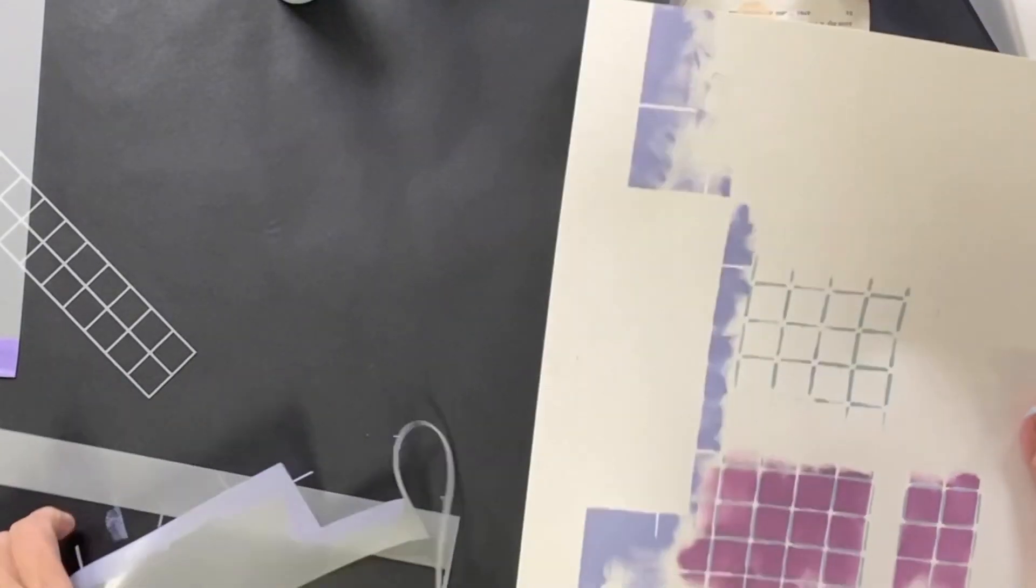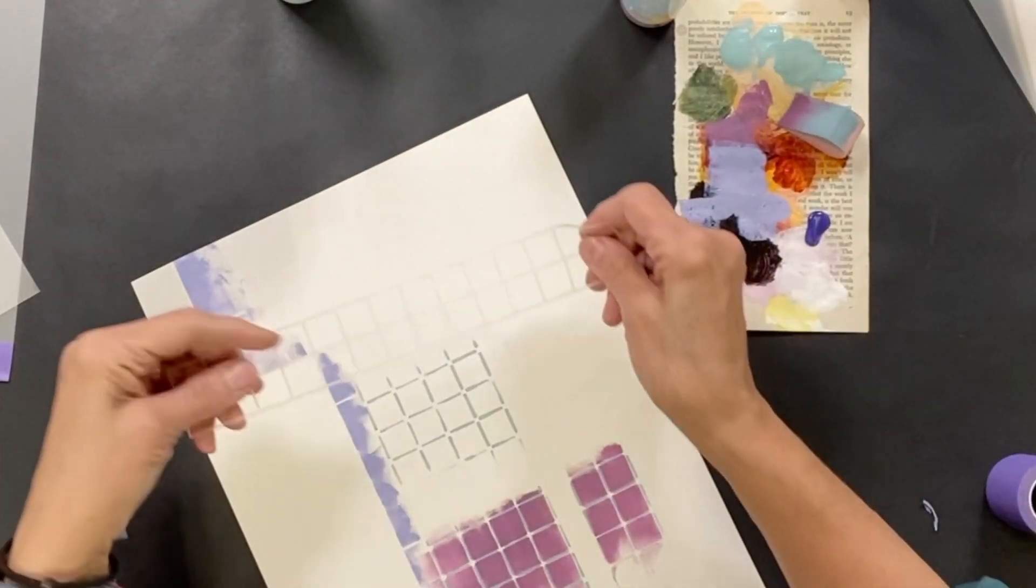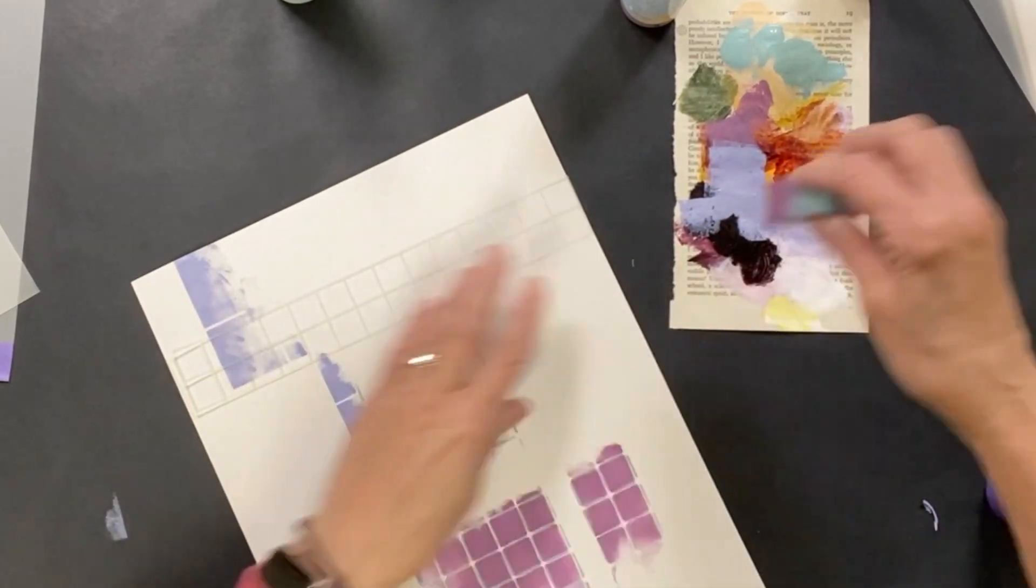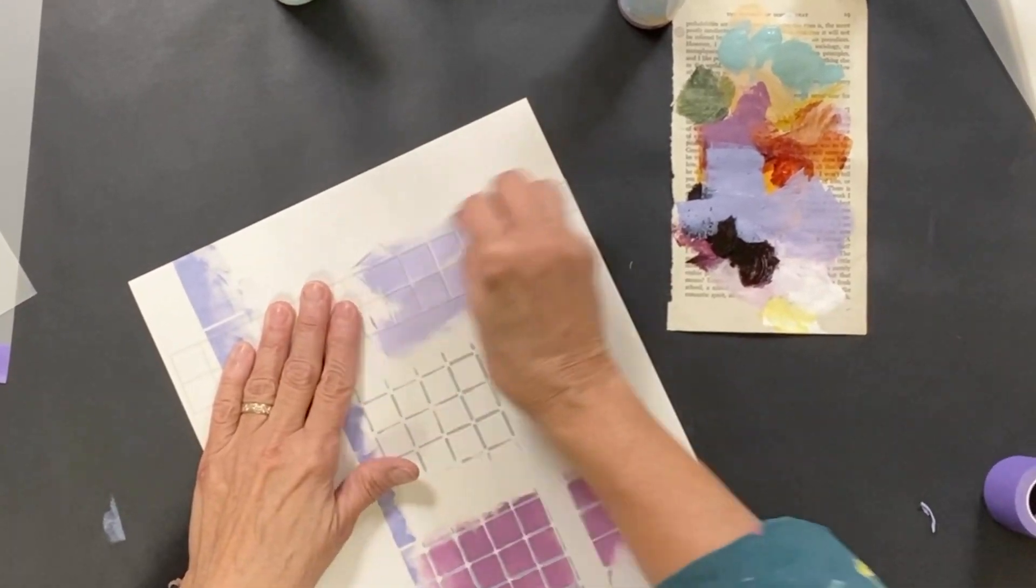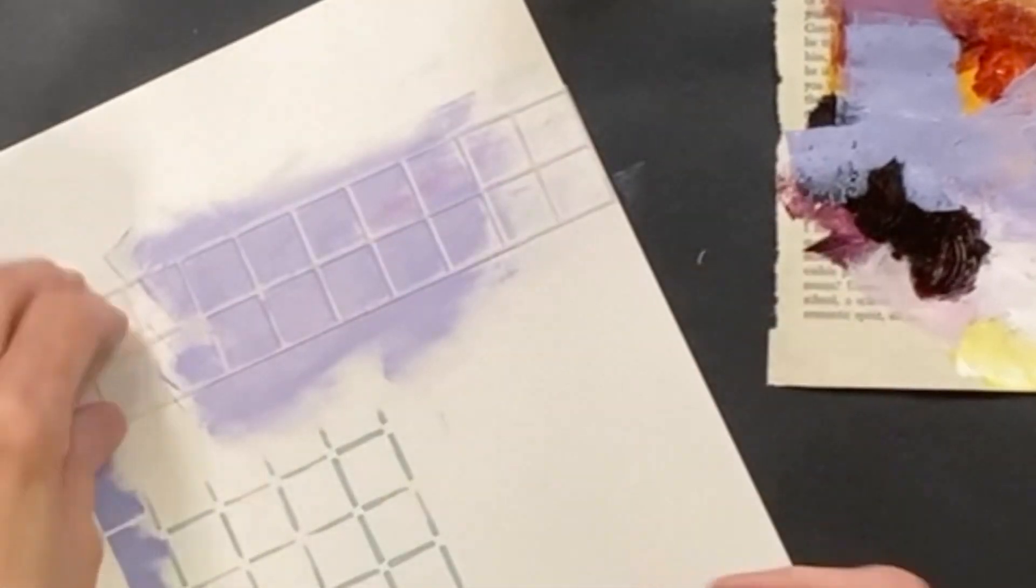So anyway, those are some ideas of what you can do, and then this little guy you could just go all around. When you cut it out separately like that, look at how easy that is and how refined those edges are.